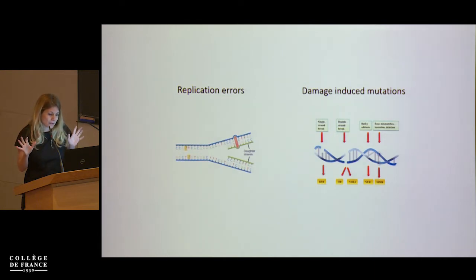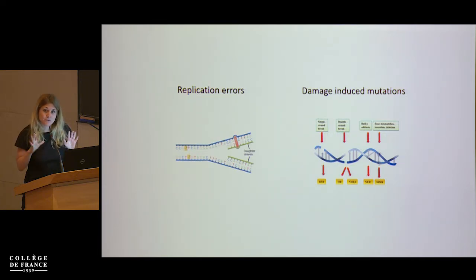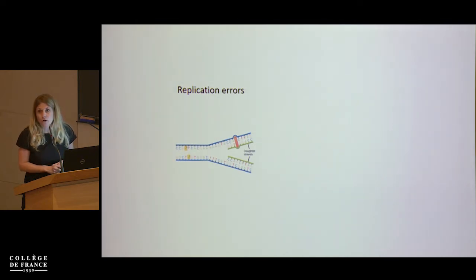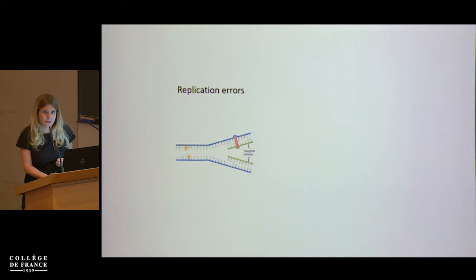If you look up almost any textbook, what you will learn is that if you're thinking specifically of germline mutations as opposed to somatic mutations, the vast majority are thought to arise from replication errors. In humans, there are two main lines of evidence that have led people to that conclusion, despite the fact that we've known for a long time that not all germline mutations are due to damage.